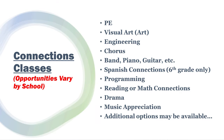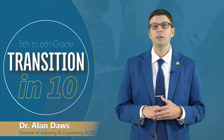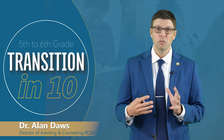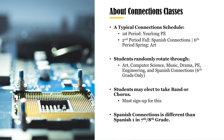You can have PE, visual arts, chorus, drama — there are a lot of different things that you can look forward to at the middle school level, including world language such as Spanish, which we'll talk about in just a moment. The schedule for connection classes could vary a great deal depending on the school. You could have a year-long PE class, and your second connection period could be split — one class in the fall and one class in the spring.